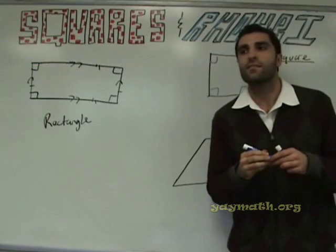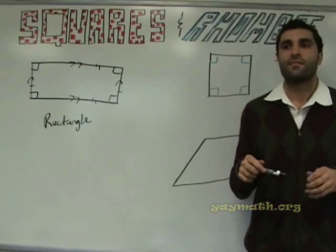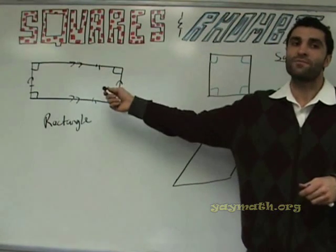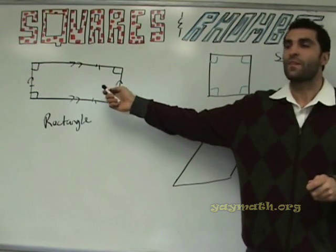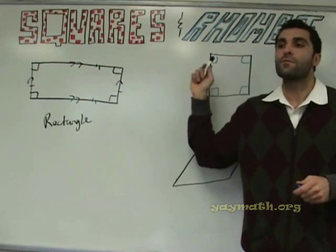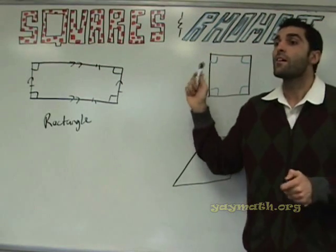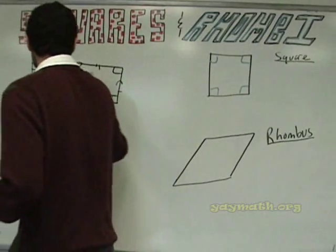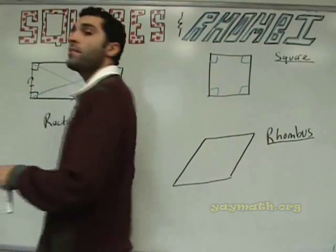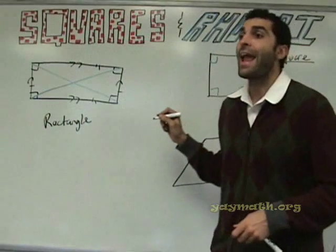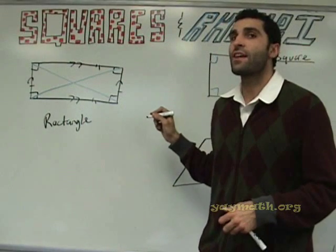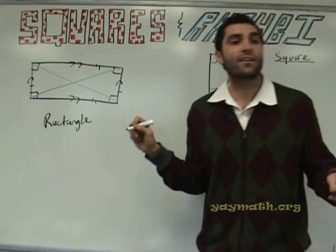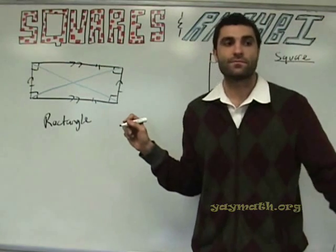What else applies? The diagonals bisect each other. The diagonals bisect each other. And what else do the diagonals do? They are congruent. Very good. They do not bisect the angles, though.